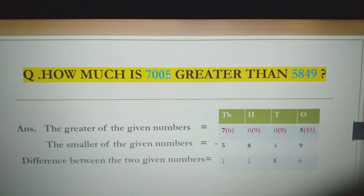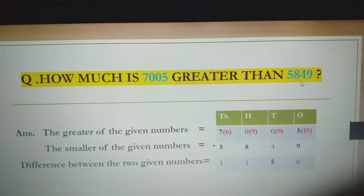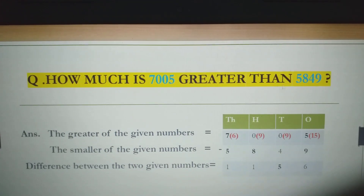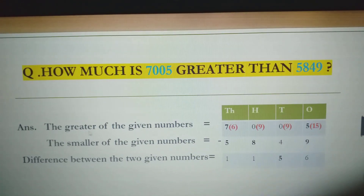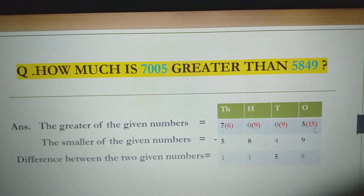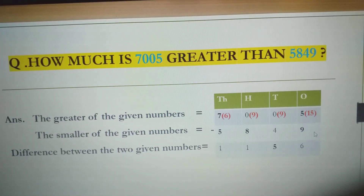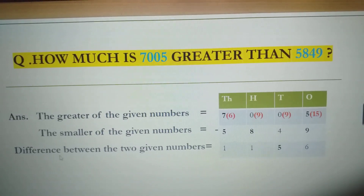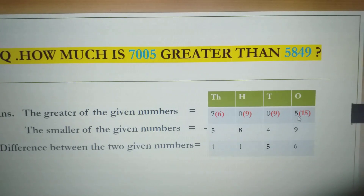What is the greater number here? The greater number is 7,005. And what is the smaller number here? The smaller number is 5,849. We have to do subtraction here. According to the question, the greater of the given numbers is 7,005 and the smaller is 5,849. We will do the subtraction from the ones place. At the ones place, 5 is smaller than 9, so we can't subtract 9 from 5. We will take the borrow from 0, but 0 is already 0, so we can't borrow from 0. We move to the next place, which is also 0.